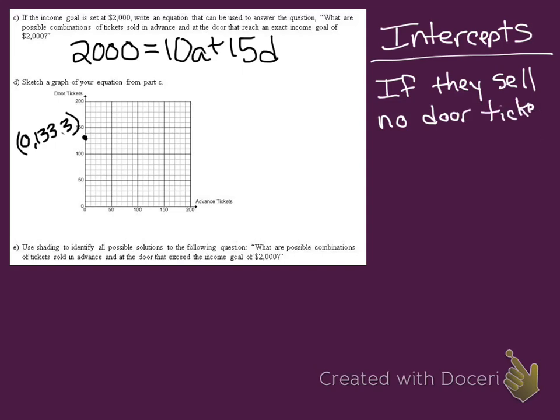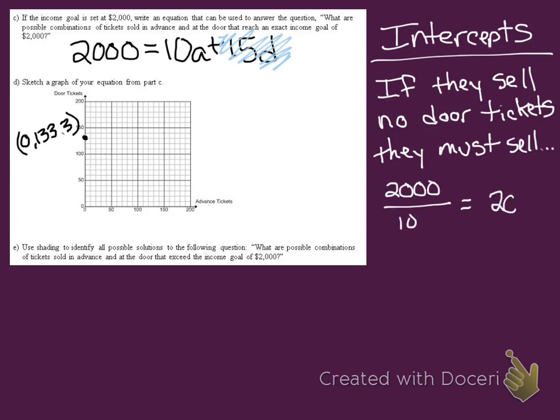Now we'll look at the same type of thing, but we're going to switch the tickets we're looking at. Now we're going to say if they sell no door tickets, how many advance tickets do they need to sell? If they're selling no door tickets, we don't need that part of our rule. We're left with 2,000 equals 10A. We'll divide 2,000 by 10, and that gives us 200 advance tickets. That gives us another point to plot, our x-intercept. Now we can connect those two points, and that line shows all possible combinations of advance and door tickets that would equal exactly $2,000 of income.